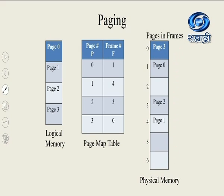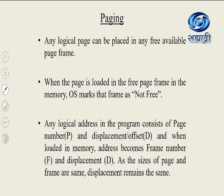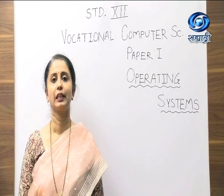The physical memory is divided into page frames, and the frame size is the same as the page size. Pages are loaded in memory at various locations — page 0 is loaded in frame 1, page 2 in frame 3, page 1 in frame 4, and so on. The OS maintains an index called the page map table — PMT — to keep a record of pages, frames and which page is loaded in which frame. Any logical page can be placed in any free available page frame. When a page is loaded in a free page frame, the OS marks that frame as not free. Any logical address in the program consists of page number P and displacement or offset D. When loaded in memory, the address becomes frame number F and displacement D — since the sizes of page and frame are same, the displacement remains the same.